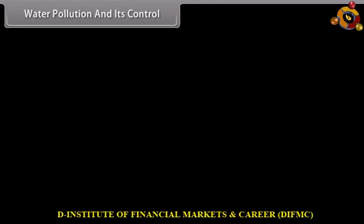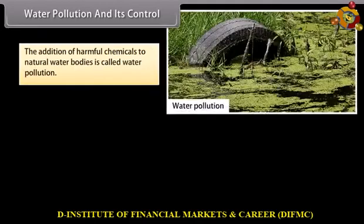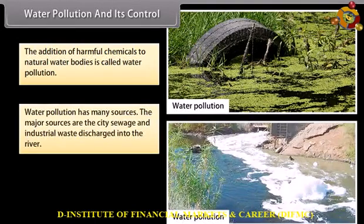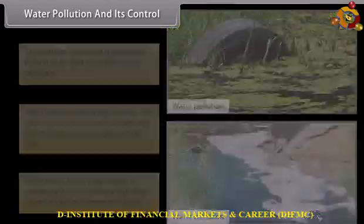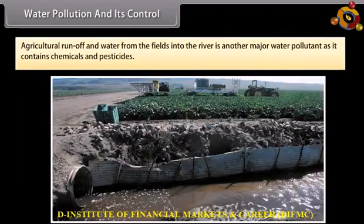Water pollution and its control. The addition of harmful chemicals to natural water bodies is called water pollution. Water pollution has many sources. The major sources are city sewage and industrial waste discharged into rivers. Only about 10% of wastewater is treated; the rest is discharged into water bodies. Agricultural runoff from fields into rivers is another major water pollutant, as it contains chemicals and pesticides.